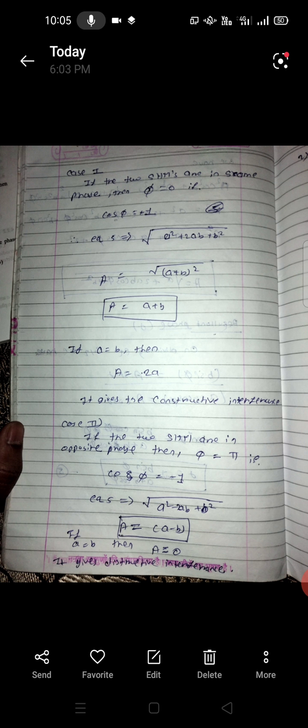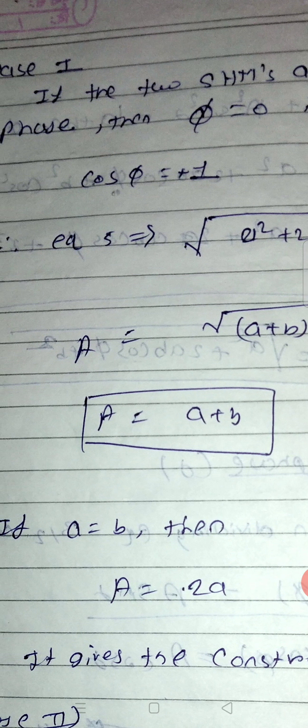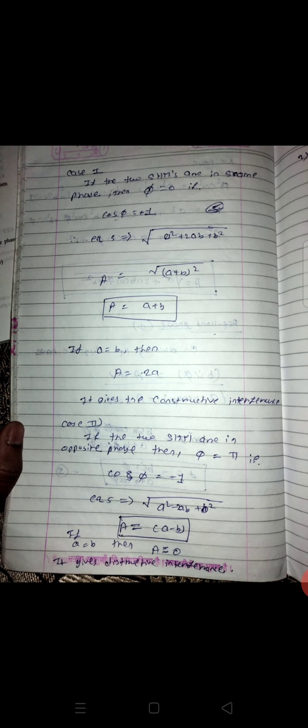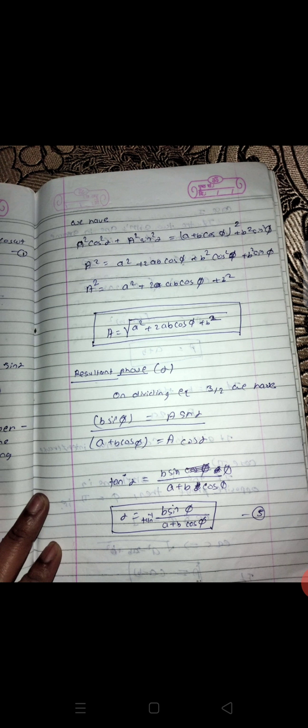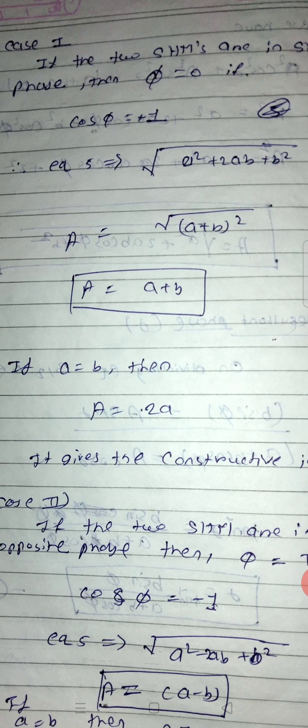We have two cases to study here. Case number one: if the SHMs are in the same phase, then φ = 0. If they are in the same phase, cosφ = +1. So putting this into the amplitude equation, A² = a² + 2ab(1) + b², which gives A = under root of (a + b)².